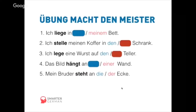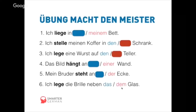'Mein Bruder steht an die oder der Ecke' — my brother stands at the corner. He's standing there, so it's a position — der Ecke, dative. Last test: 'Ich lege die Brille neben das oder dem Glas' — I put the glasses next to the glass. If you put it there, it's a direction, hence the accusative: das Glas.